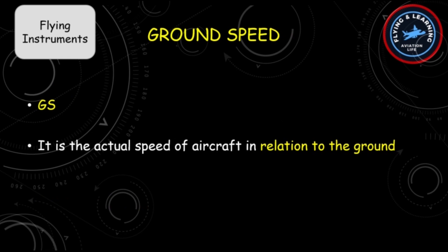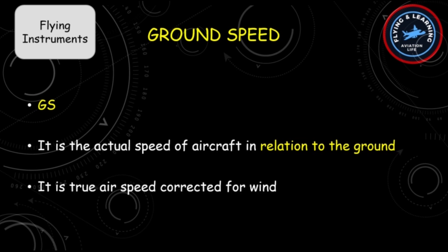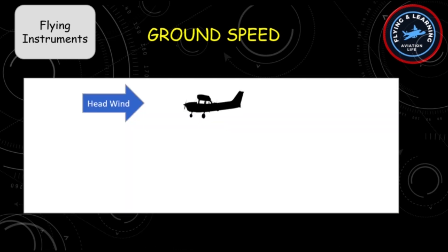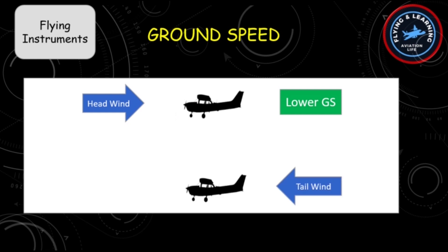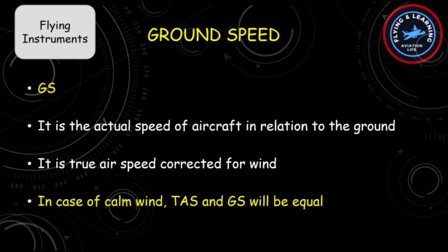The last type of airspeed is Ground Speed, commonly abbreviated as GS. It is the actual speed of the aircraft in relation to the ground — true airspeed corrected for wind. If an aircraft experiences headwind, it will be slowed down and its ground speed will decrease. In case of tailwind, the aircraft will be pushed by the wind and its speed relative to the ground will increase. If wind is calm, true airspeed and ground speed will be equal.